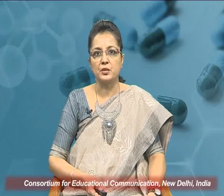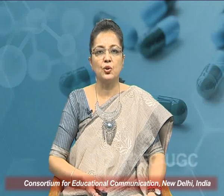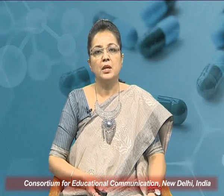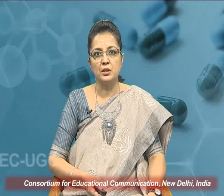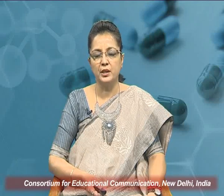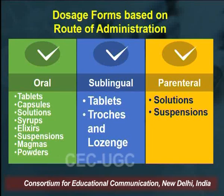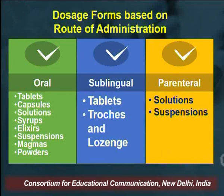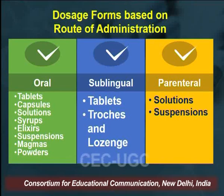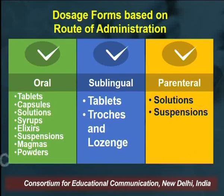The second basis of classification is based on route of drug administration. If administered orally, it includes tablets, capsules, solutions, syrups, elixirs, suspensions, magmas, and powders. For sublingual administration, it includes tablets, troches, and lozenges. For parenteral administration, it covers solutions and suspensions.